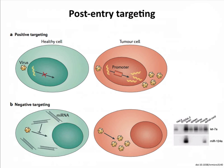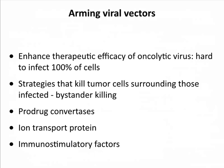We also like to arm viral vectors with proteins that will kill tumor cells and neighboring bystander cells, since you can never infect every cell in a tumor. One approach is to insert prodrug convertases into the vectors — enzymes that convert an inactive prodrug into an active toxic drug locally. Another approach involves inserting an ion transport protein, and a third uses immunostimulatory factors to enhance immune killing of tumor cells in the vicinity.